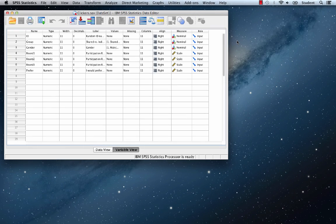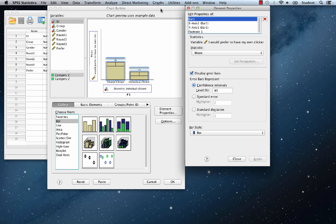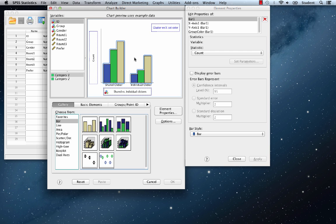So how do we divide a bar chart by group and gender? We're going to go to graphs, chart builder. This is the example that we've just run, and here's what we're going to do.